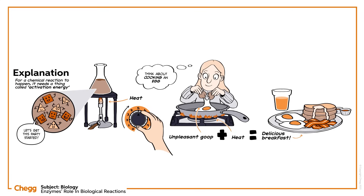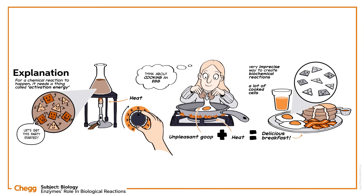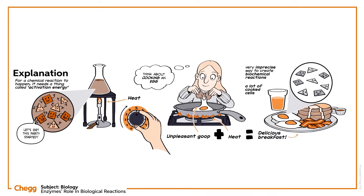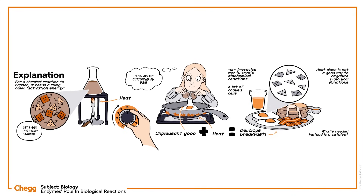Much the same has to happen for each biological process. But, as you'll have learned from breakfast, simply adding heat is a very imprecise way to create biochemical reactions — you end up with a lot of cooked cells. And if you don't end up cooking the cells, you'll also activate a number of unhelpful and unwanted reactions. So heat alone is not a good way to organize biological functions that we depend on. What's needed instead is a catalyst — something that speeds up the rate of reaction without itself being used up in the process. This is exactly what enzymes are.